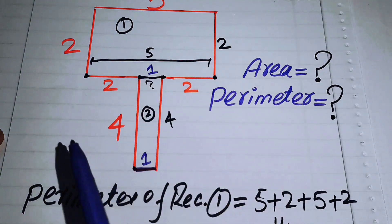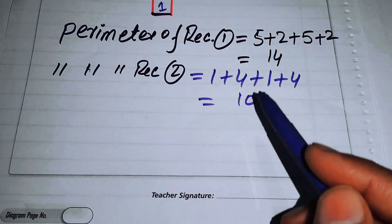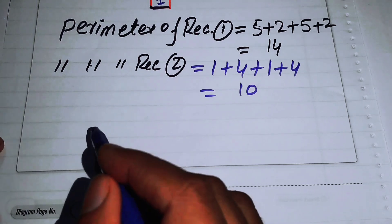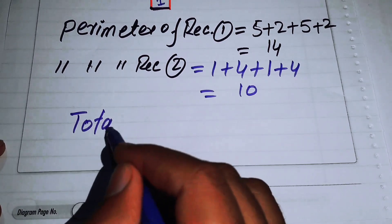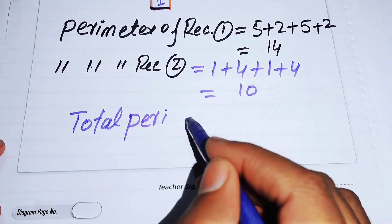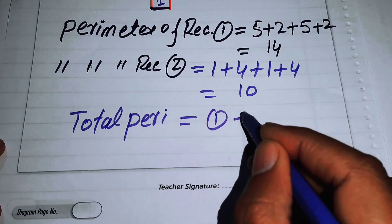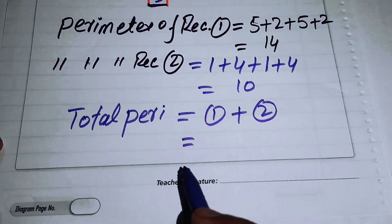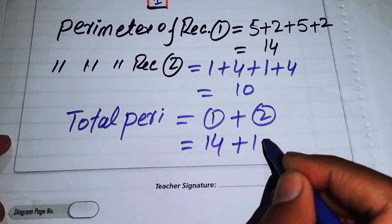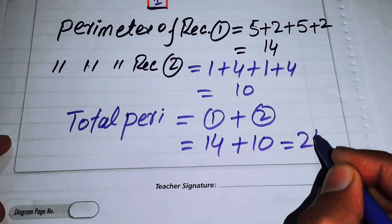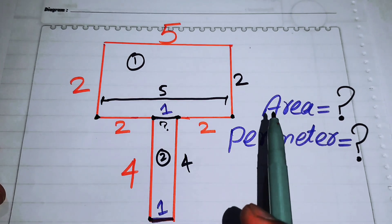To find the total perimeter of the complete figure, we add the perimeters of the two rectangles: the perimeter of Rectangle 1 is 14, and the perimeter of Rectangle 2 is 10, giving a total perimeter of 24.